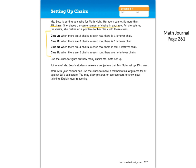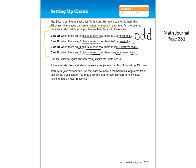With each of these clues, they tell us something that will help us figure out the answer. Clue A says that when there are two chairs in each row, there is one leftover chair — this tells us the number must be odd, because if it were even there would not be a leftover chair. Clue B: when there are three chairs in each row, there is one leftover chair. Clue C: when there are four chairs in each row, there is still one leftover chair. And clue D says that when there are five chairs in each row, there are no leftover chairs — so it's going to be a multiple of five.